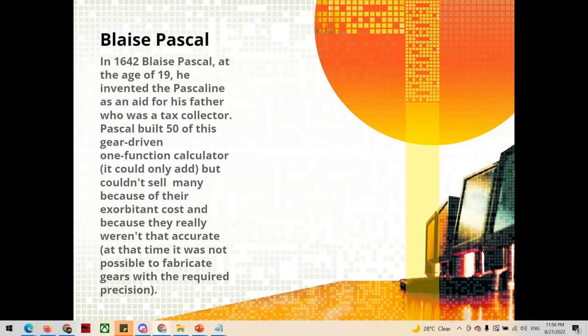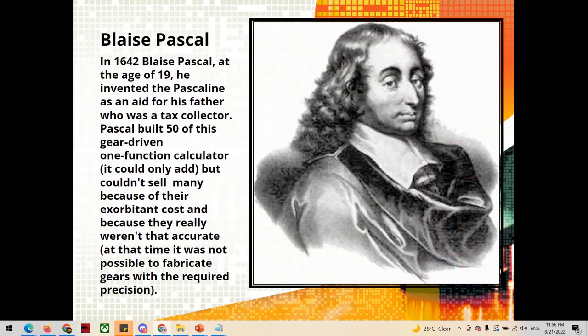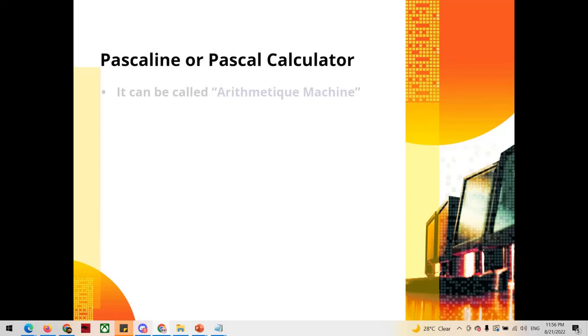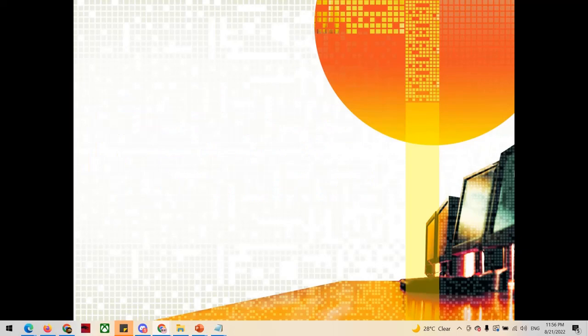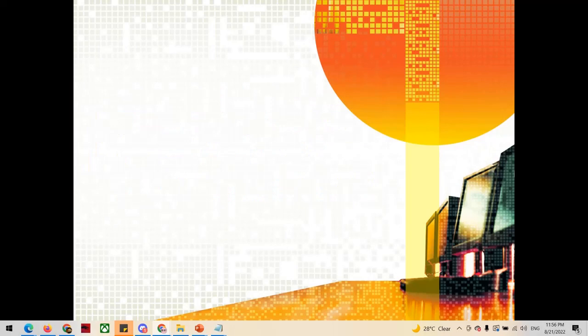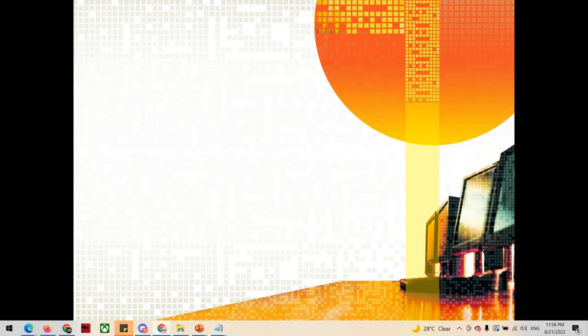While Blaise Pascal is best known for his invention of the Pascaline calculator. He invented this type of technology as an aid for his father, who was a tax collector. This is the image of Blaise Pascal. Blaise Pascal's interest in calculating may have come from the desire to assist his father with the numerous calculations required in his job as a superintendent of taxes. In about 1642, Pascal developed a calculator called the Arithmetic or Pascaline. This is a sample image of the Pascal calculator.